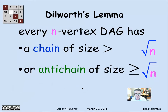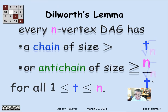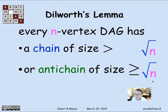Let's think of a simple application. If we choose T to balance anti-chain size and chain size, we set T to be the square root of n. Then on one side we have square root of n, and on the other we have n divided by square root of n, which is also square root of n. We can conclude that every n-vertex DAG has either a chain of size at least the square root of n, or an anti-chain of size at least the square root of n — or possibly both.